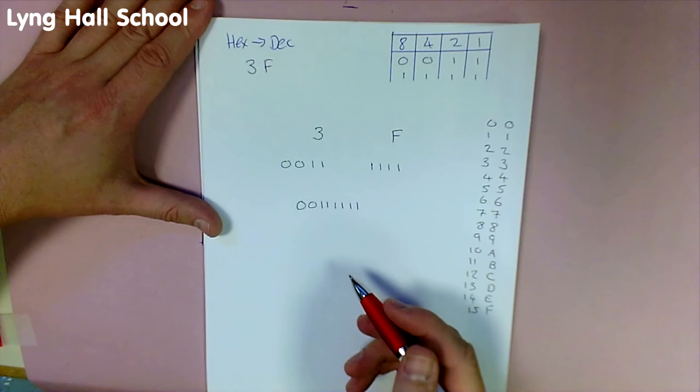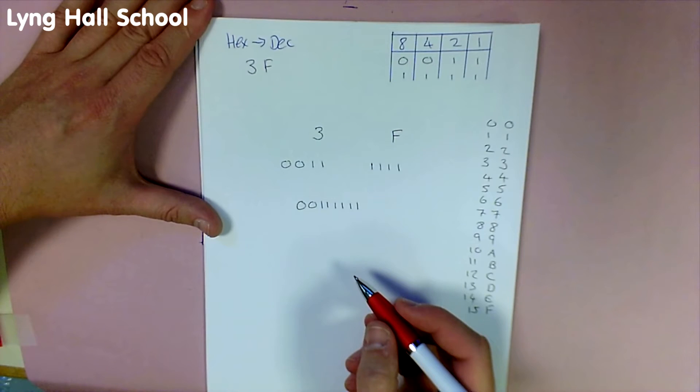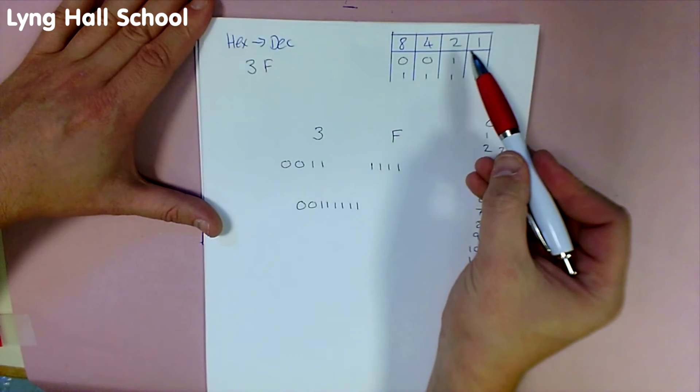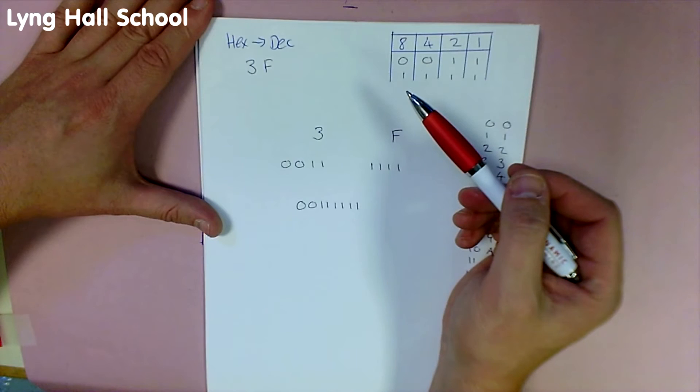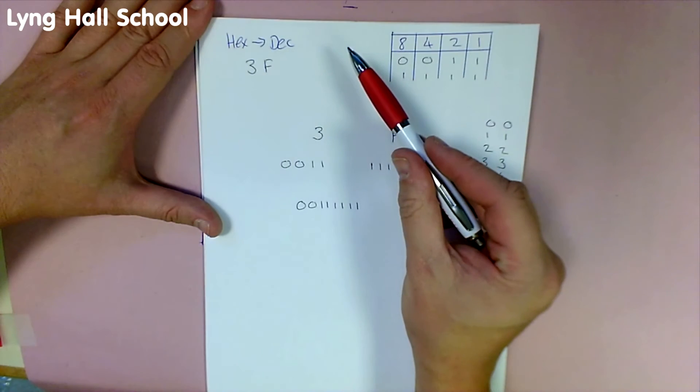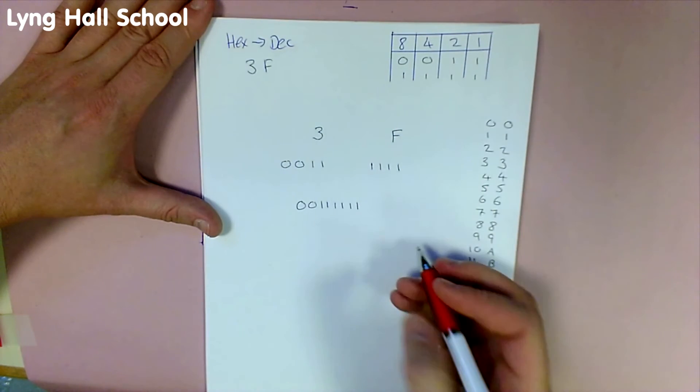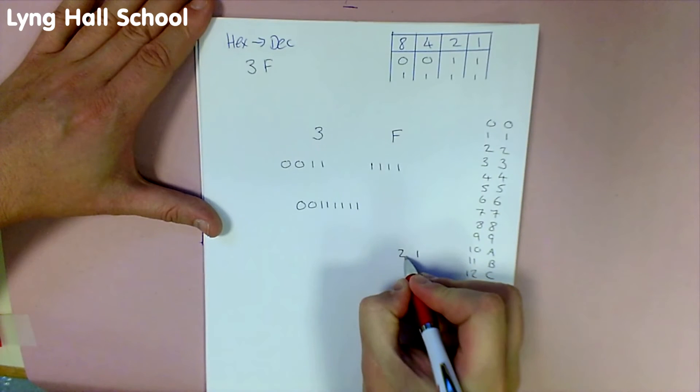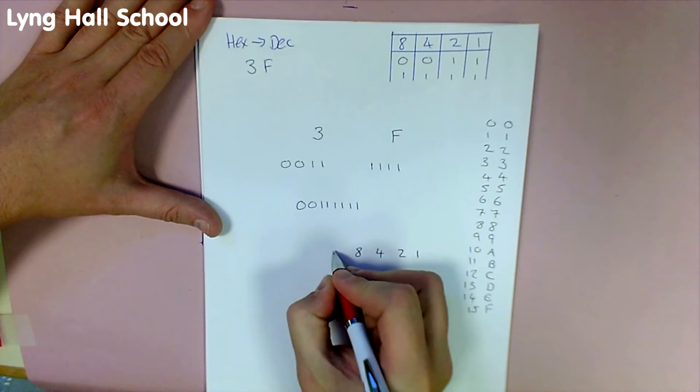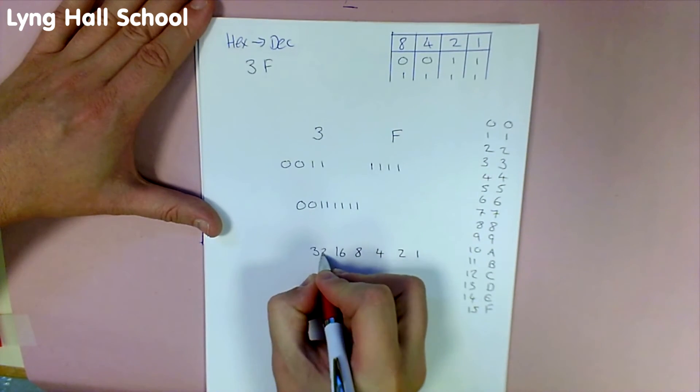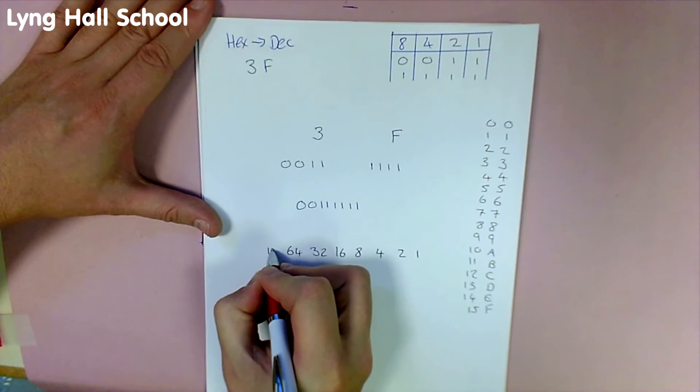This now will need to be converted into a decimal number. However, as opposed to having 1, 2, 4 and 8 with a 4-bit number, we will need to double this so we can fit in 8 bits. So 1, 2, 4, 8, 16, 32, 64 and 128.